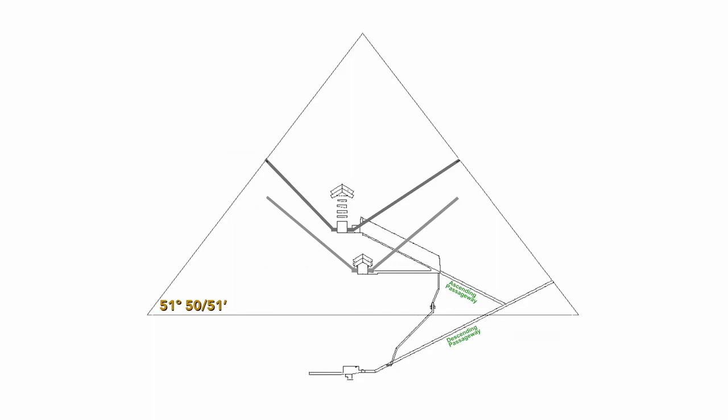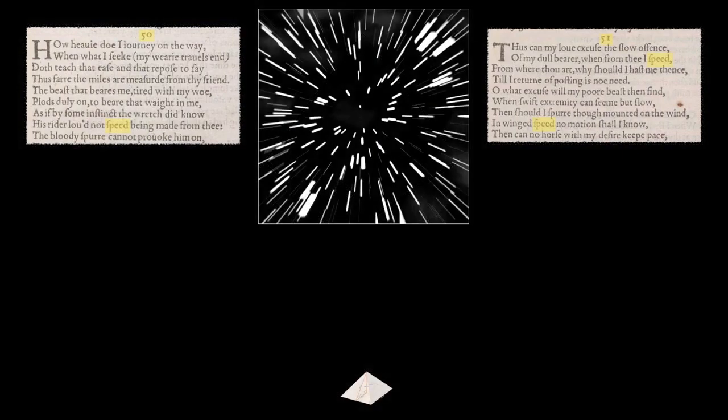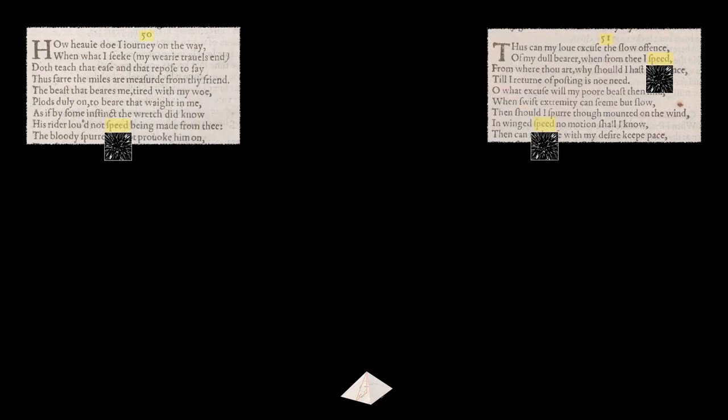Now, if we do a search in the sonnets for the word speed, we find it occurs in only two places. Sonnet 50 once and sonnet 51 twice. Hmm. Interesting. 51, 50, 51. The angle of the Great Pyramid.